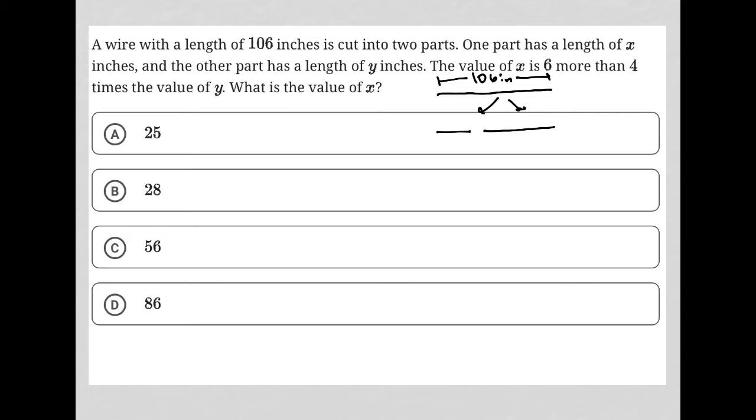I don't know the proportionality of those two parts, but that's fine for now. One part has a length of X inches and the other part has a length of Y inches. I'll call this one X and this one Y. The value of X is six more than four times the value of Y.